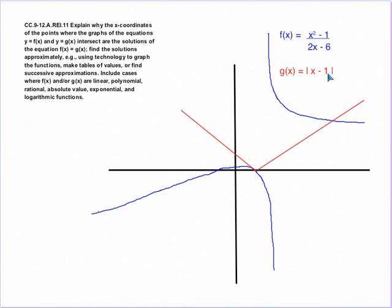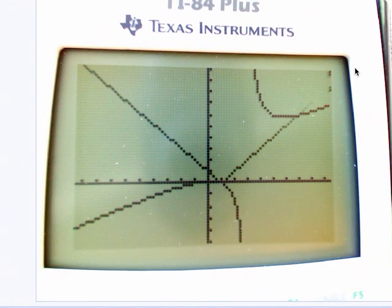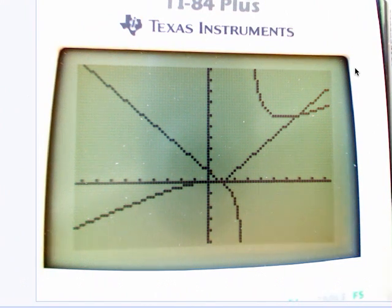This one would not be as difficult as some of the others in terms of setting the two equations equal to each other and solving manually. Students in Algebra 1 and Algebra 2 could handle setting f(x) = g(x) here without the technology. But of course, we want to utilize the technology to the extent that we can. Here we have our next pair of functions — on the calculator as functions 5 and 6. If we graph these two, there is our rational function and our absolute value function.